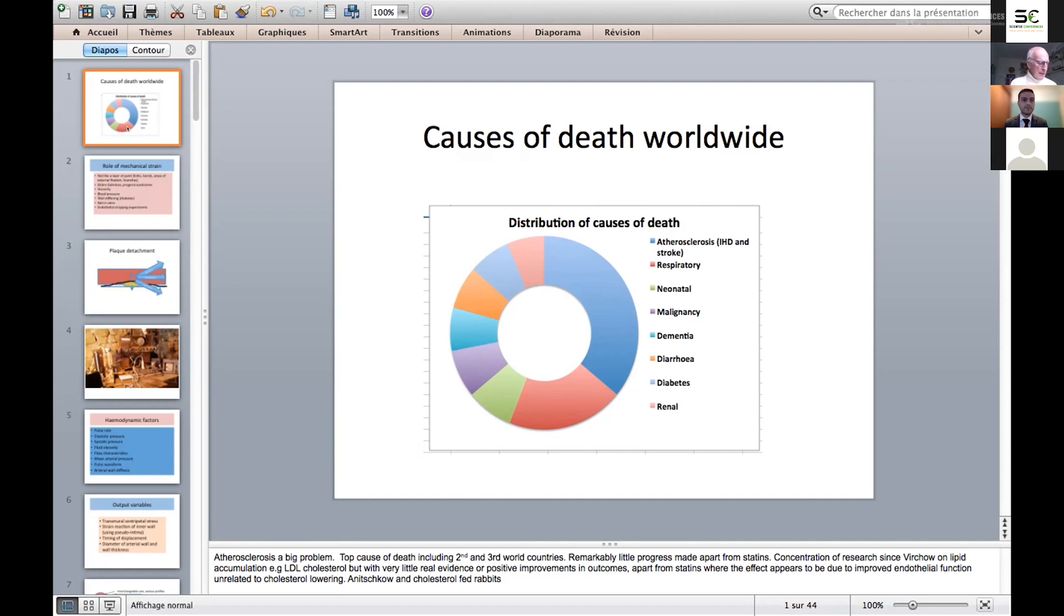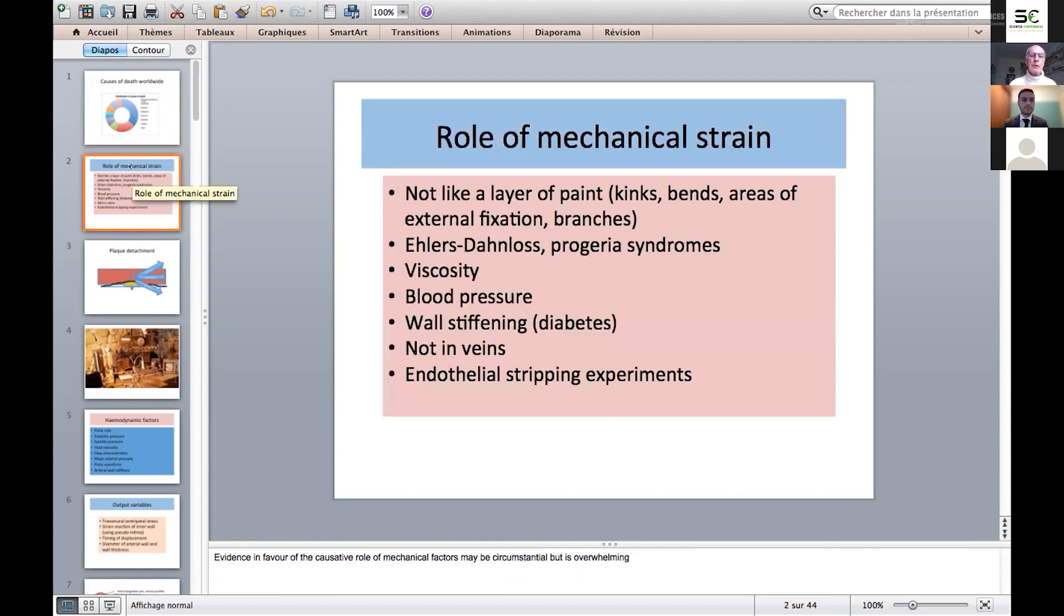It's interesting that what's going on is at points of mechanical stress. If it was just a question of cholesterol, we'd expect to see atherosclerosis laid down rather like a layer of paint. But it's not. It's laid down in kinks or bends in the arterial tree, places where the external wall is fixed, like the abdominal aorta to the lumbar spine, and at the sides of branch vessels.